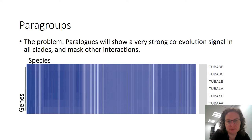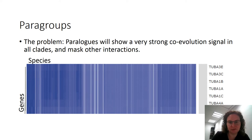The next subject we dealt with is paralogs. Paralogs show a very strong co-evolution signal in all clades and mask other interactions. Here you see an example with the tubulins — these are genes, these are species organized from human to the more distant species. You can see that each column is a species and they all have very similar phylogenetic profiles, which is not surprising because they have very similar sequence similarity. They are working together, but we don't need phylogenetic profiling to identify sequence similarity, so this information is not relevant to us.